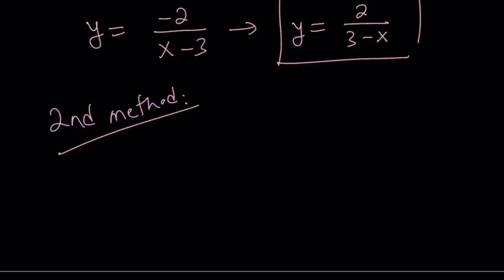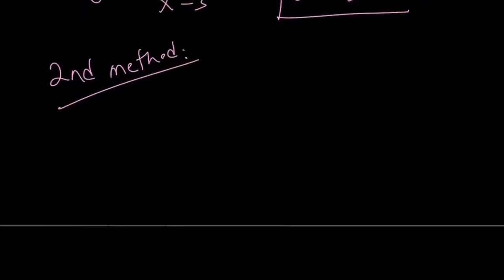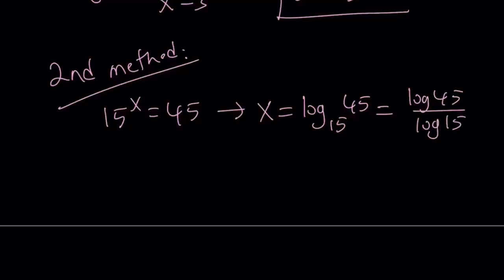For my second method I'm going to be using a slightly different approach. I'm going to be using logarithms. So since 15 to the power x is 45 by using properties of logs, and you can just look at the definition of logs, it's very simple. Even if you don't know any properties, just look at the definition. So from here x can be written as log 45 with base 15. And we can kind of simplify this by using change of base which gives me log 45 over log 15.